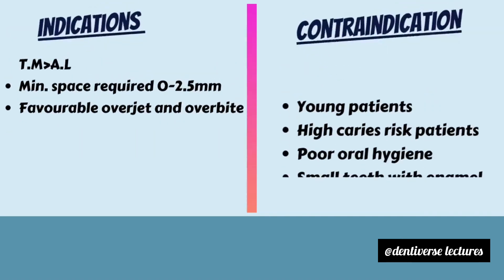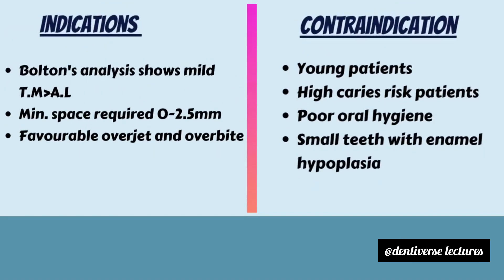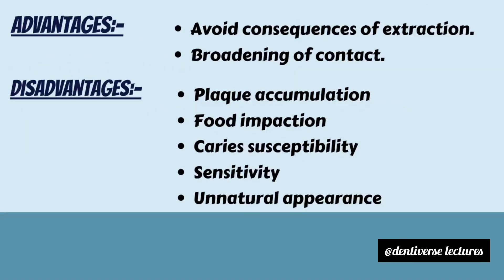Proximal stripping is also indicated to obtain favorable overjet and overbite. Contraindications are young patients due to large pulp chamber which can be exposed during the procedure, high caries risk, and enamel hypoplasia. Advantages include that extraction consequences are avoided and there is broadening of contact.